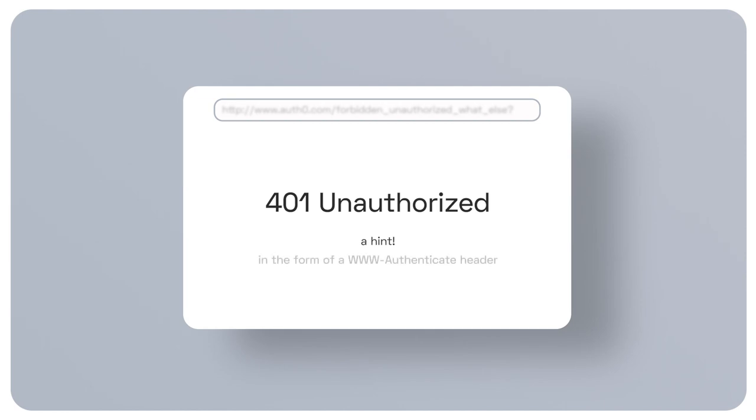That hint comes in the form of a www-authenticate header with the specific authentication scheme to use. For example, the response could indicate that the client needs a bearer scheme and provide the realm parameter to indicate the set of resources the API is protecting, and even include the reason for the denied access. On the other hand, if the client request does not include any access token, it's safe to assume the client wasn't aware that the API is protected, and because of that, the API's response should not include any other information.